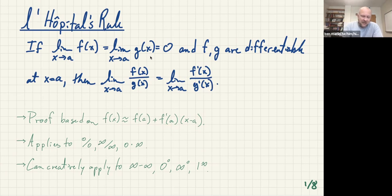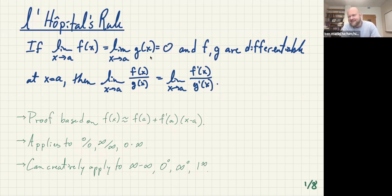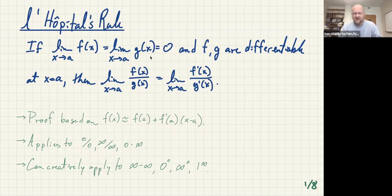We're going to use it whenever — and I shouldn't say anytime — if you try to do a limit and you cannot see a way to factor and cancel or use a special limit, and it's zero over zero, then try L'Hopital's rule. Same thing for infinity over infinity. And if you see something that has two factors — one going to zero and the other going to infinity — there's probably a way to rewrite that so that it's either zero over zero or infinity over infinity. Lastly, we'll look at an example today that has infinity minus infinity, and those are a little trickier.